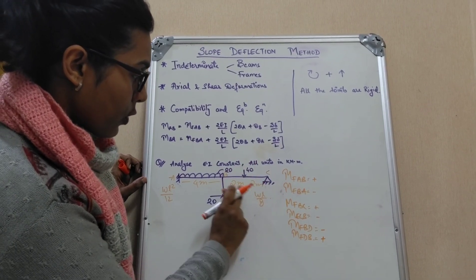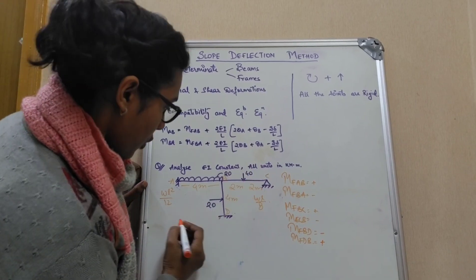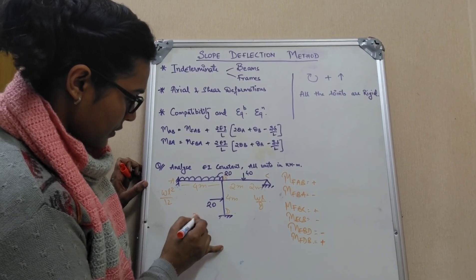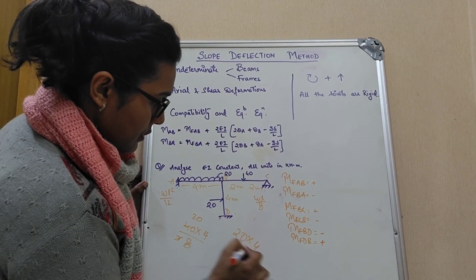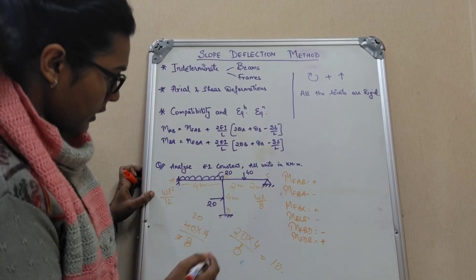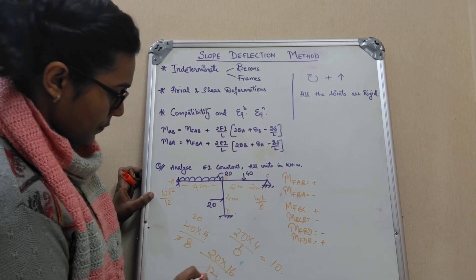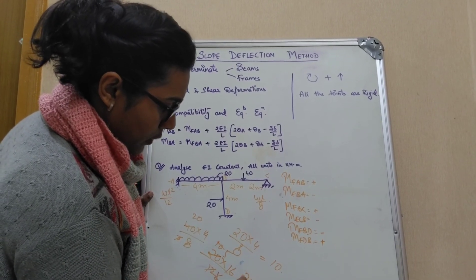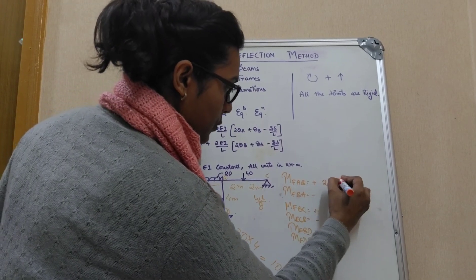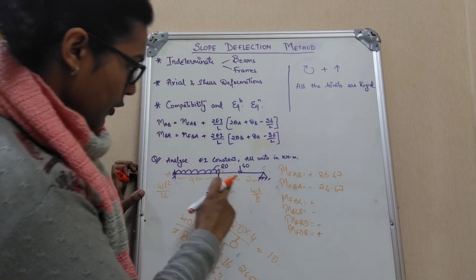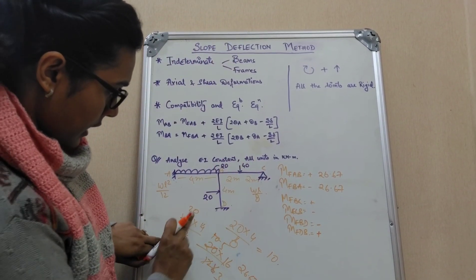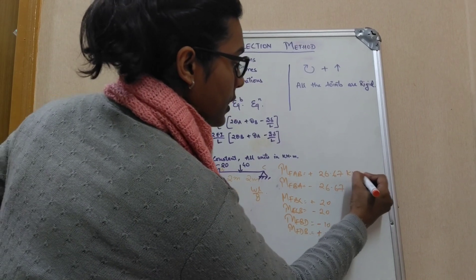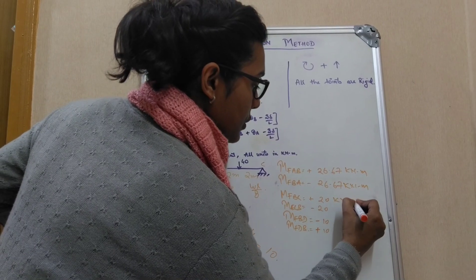Applying the formulas: for the point load, 40 × 4 / 8 gives 20. For the UDL, 20 × 4² / 12 gives 26.67 kN·m. So MFAB and MFBA are 26.67 kN·m, MFBC is 20 kN·m, and MFCB is 10 kN·m. Do not forget to put the units, because all these things carry marks.